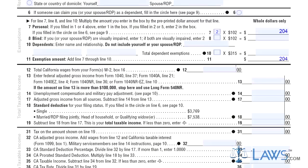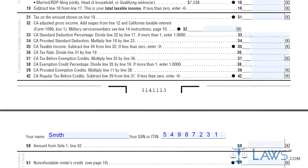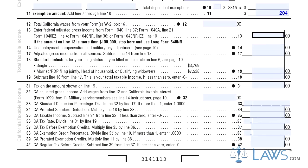Step 7: Compute your total taxable income as instructed on lines 12 through 19. Step 8: Calculate your California taxable income as instructed on lines 31 through 42.